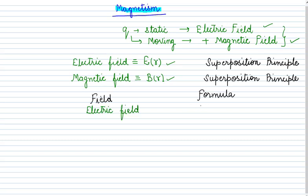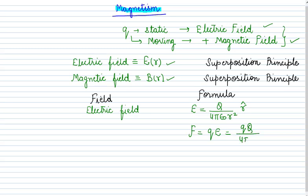The formula for electric field is E equal to kq upon r squared, and the value of k is one upon four pi epsilon naught. So it may be written as q upon four pi epsilon naught r squared, and the direction is r-hat which is a unit vector. If you want to calculate the electric force, then F is equal to qE. This is generated due to the source charge and the test charge, so the force comes out to be q times q upon four pi epsilon naught r squared in the direction of r-hat.